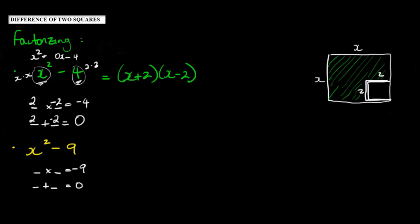And those two numbers would be 3 and negative 3 because 3 times negative 3 is 9 and 3 minus 3 is 0. So I can rewrite this as x plus 3 times x minus 3.